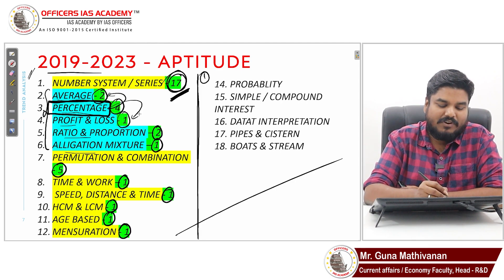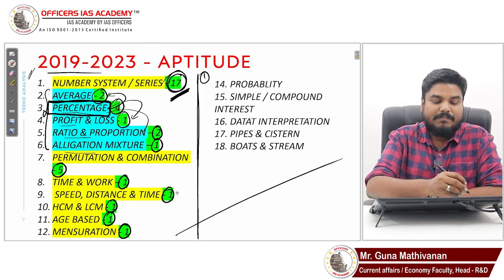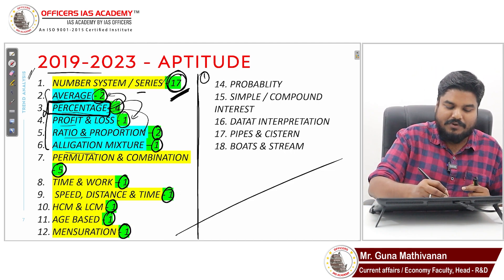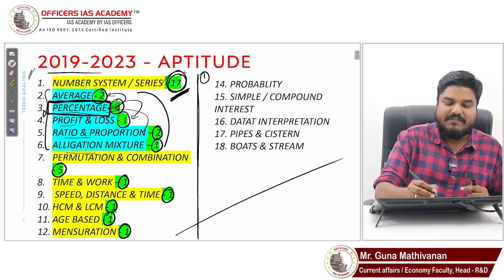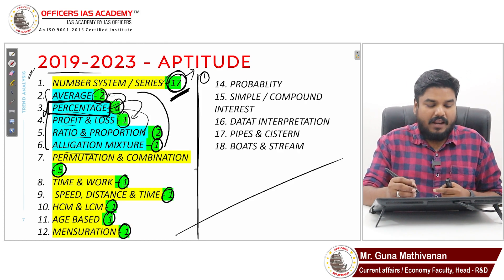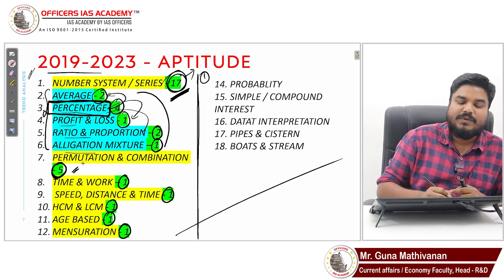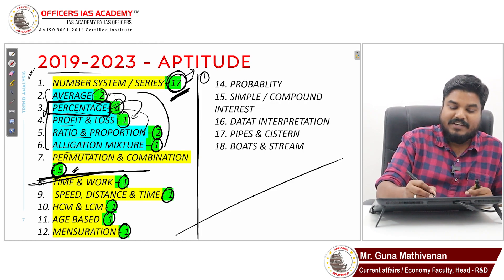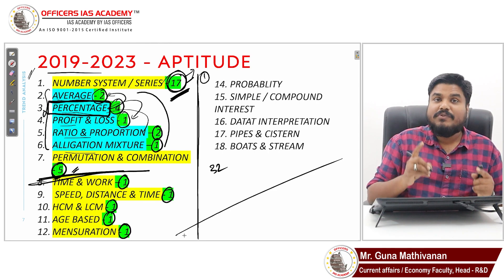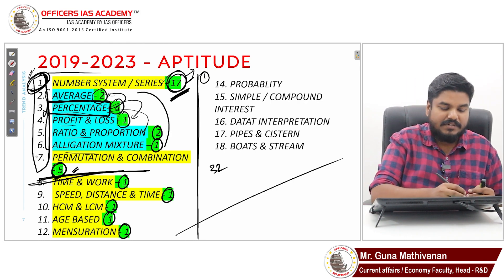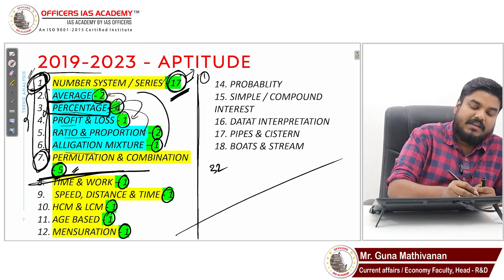Don't try to target everything — have a strategy. Number systems are unavoidable: 17 questions on average come from there, so put a lot of effort in. For the blue-shaded areas — averages, percentage, profit and loss, ratio proportion, allegation mixture — if you master percentage alone, you can manage all five of those chapters. Percentage is the base chapter. Study one chapter strongly and manage five.